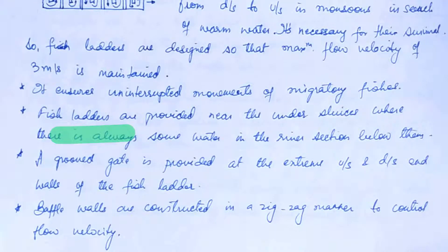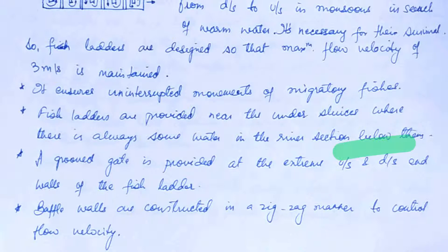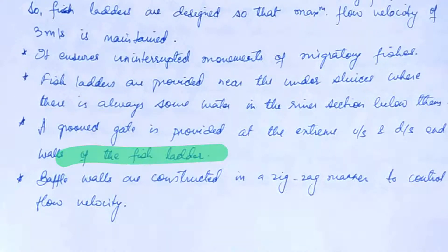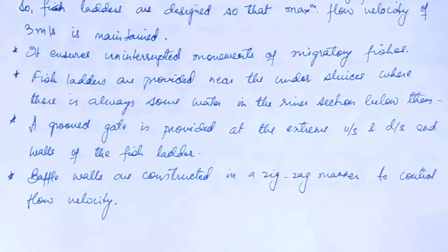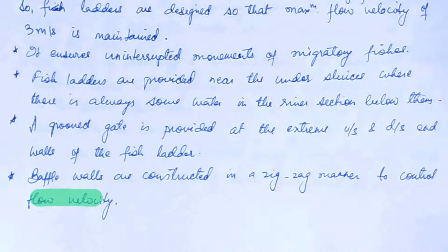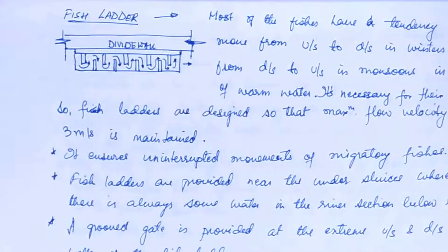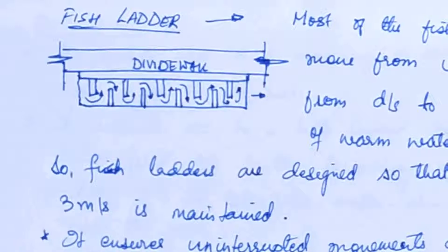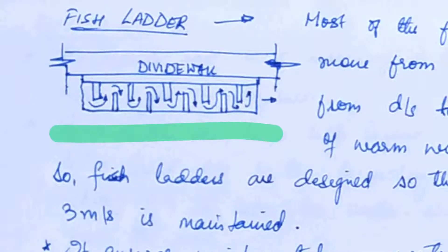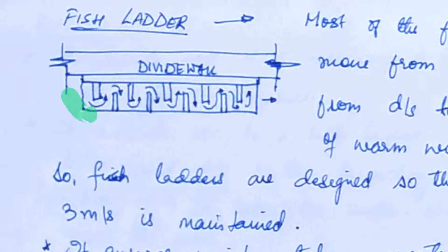Fish ladders are provided near the under sluices where there is always some water in the river section below them. A grooved gate is provided at the extreme upstream and downstream end walls of the fish ladder. The baffle walls are constructed in a zigzag manner to control the flow velocity. Here you can see the fish ladder next to the divide wall, with the baffles and the arrow marks showing the movement of the fishes.